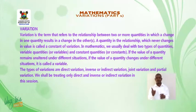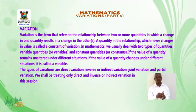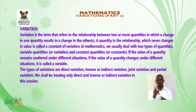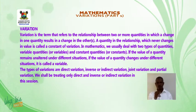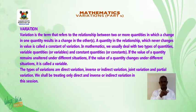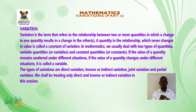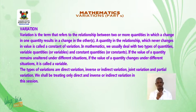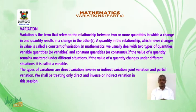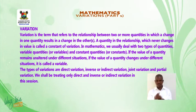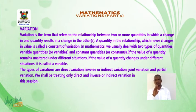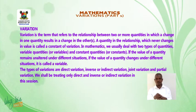Variation. Variation is the term that refers to the relationship between two or more quantities, in which a change in one quantity results in a change in the other or others. In mathematics, we usually deal with two types of quantities: variable quantities or variables, and constant quantities or constants.